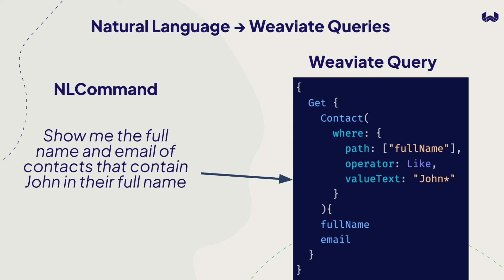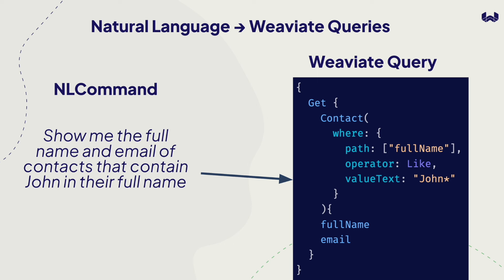Let's dive into some results of our Weaviate GraphQL Gorilla. We have a few training runs — models on Substratus AI's HuggingFace that have done the train-test split, looking at novel API references and schemas. For example, given the natural language command 'show me the full name and email of contacts that contain john in their full name,' the gorilla formats the Weaviate query using the proper get syntax — correctly using where, the path full name, the like operator, and 'john*' for the wildcard, correctly closing all brackets.